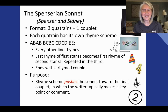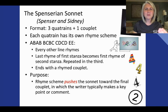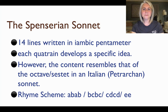This slide talks about the format of the Spenserian sonnet. It contains three quatrains — a quatrain being a group of four lines, like a quad having four wheels. Three times four is twelve, plus one couplet (two lines), giving us our 14 lines. It follows a certain rhyme scheme, which will make a lot more sense once we look at the sonnet.